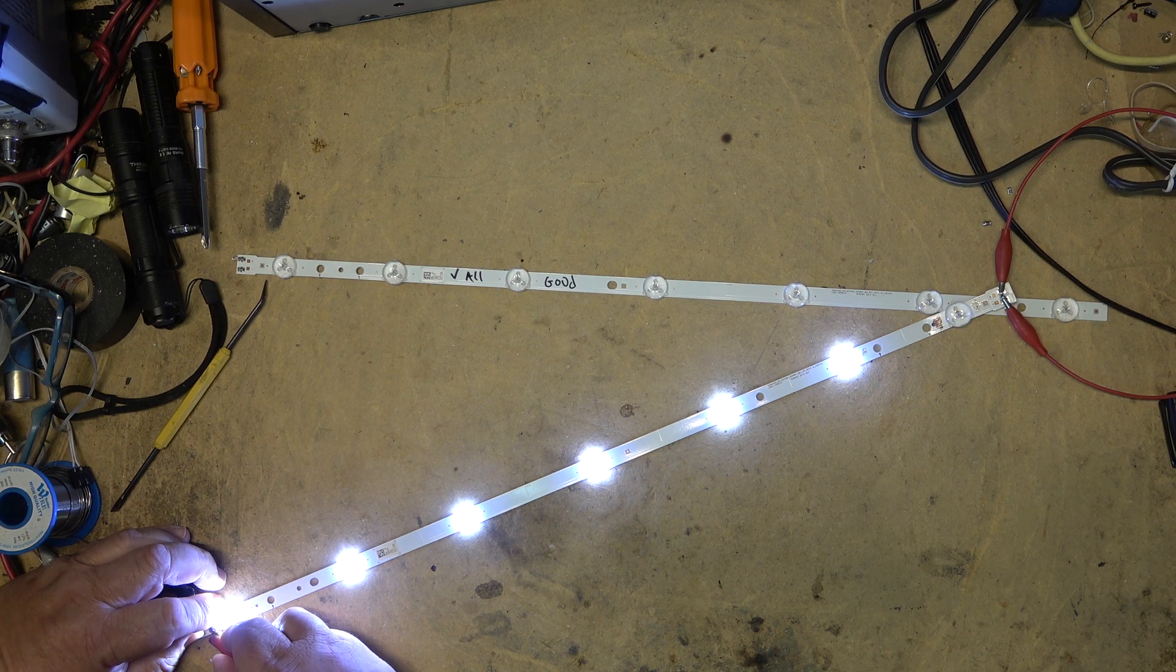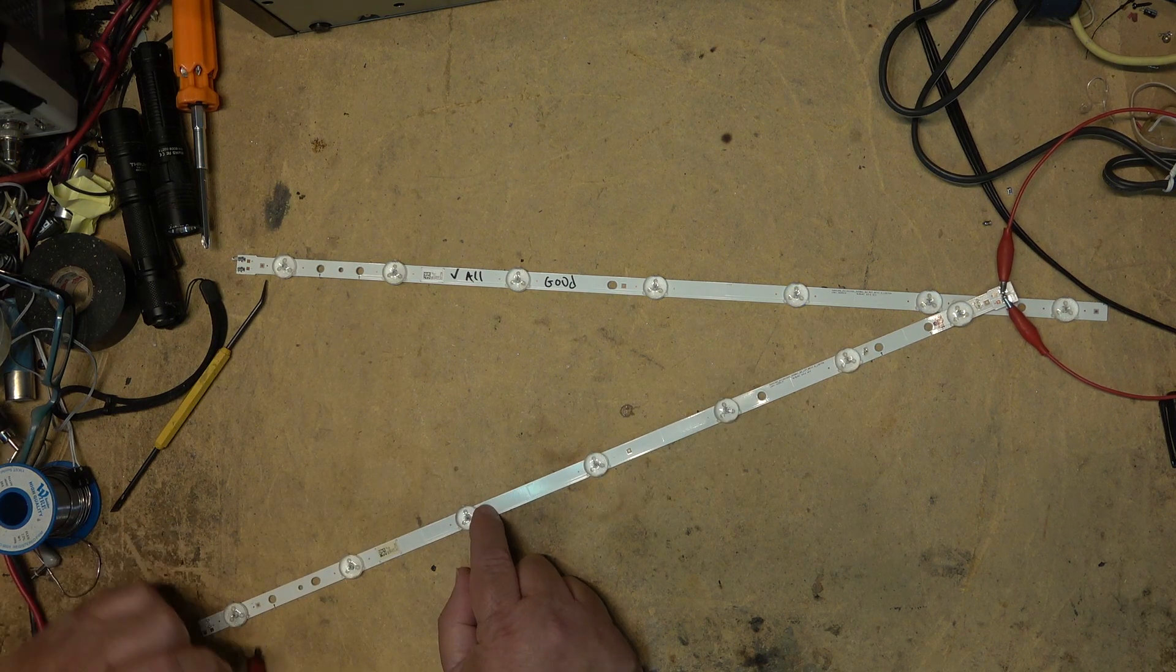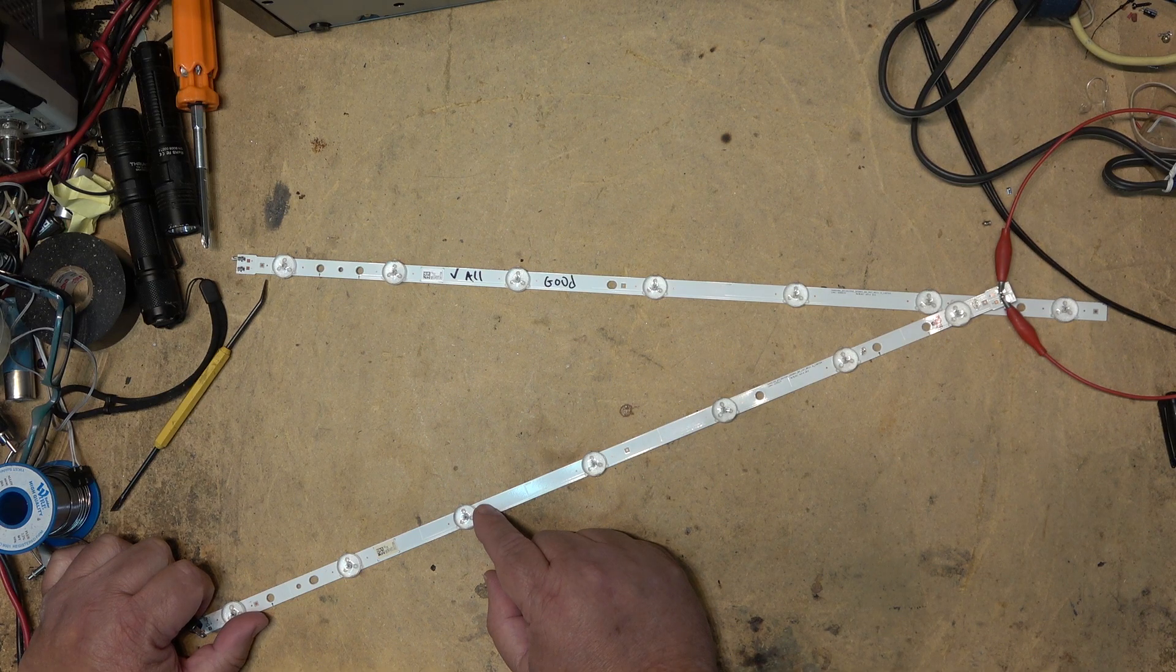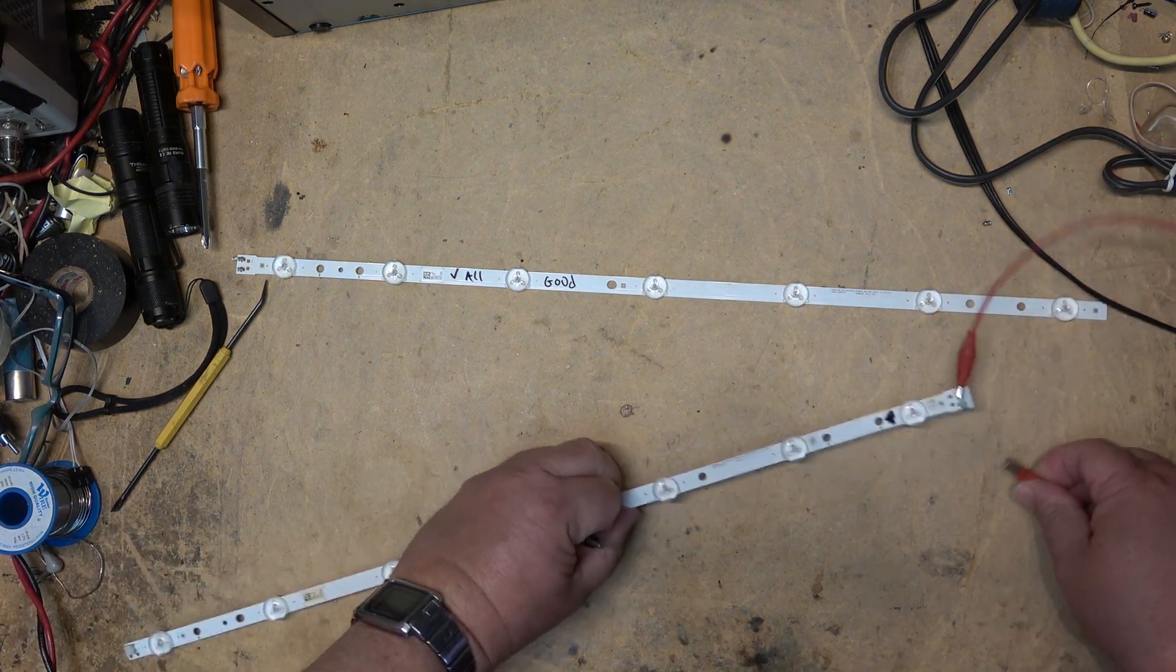Now if you had all your LEDs in parallel with each other, you would actually have to have a fuse for each individual LED. Because if you didn't and one shorted, you'd blow your power supply up.